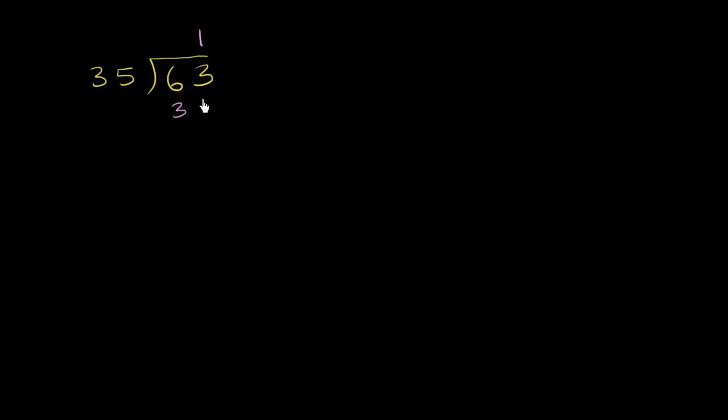1 times 35 is 35. And then if we were to subtract, we can regroup up here. We can take a 10 from the 60, so it becomes a 50, give that 10 to the 3, so it becomes a 13. 13 minus 5 is 8. 5 minus 3 is 2.